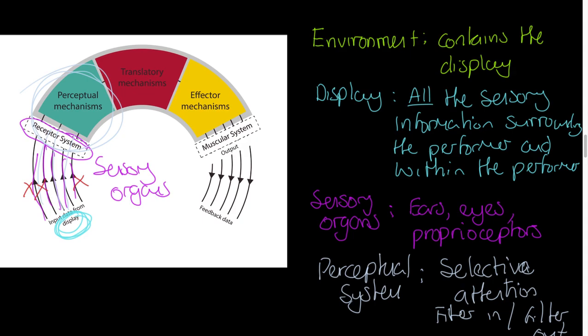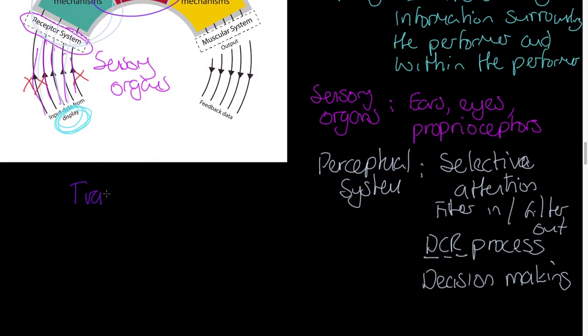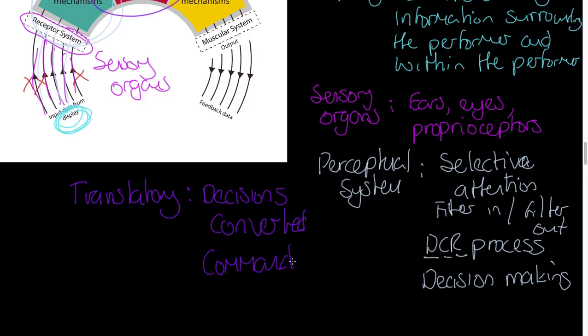We can't move based on a decision. That's where our translatory mechanism comes in. So let me write this down here. Translatory. When we talk about translatory, this is different now. This is where decisions made in our perceptual system, decisions are converted. They are converted into a command. In other words, we take the decision, I'm going to move my hand up to the right and open my fingers to receive the ball outstretched. That's the command we're going to send via the nervous system to the muscular system to produce that movement. And of course, we have to translate that into neural connection, in other words, nerve impulses. So that's what we mean by the translatory mechanism.